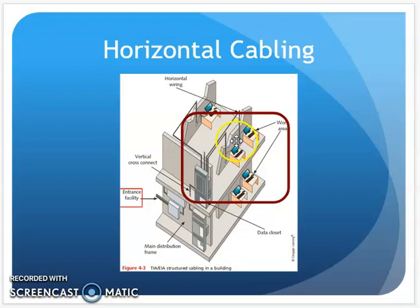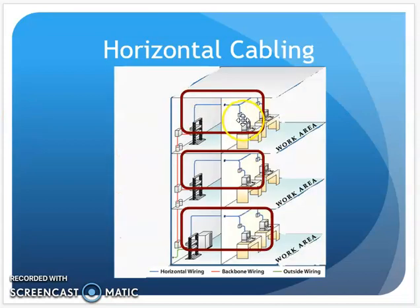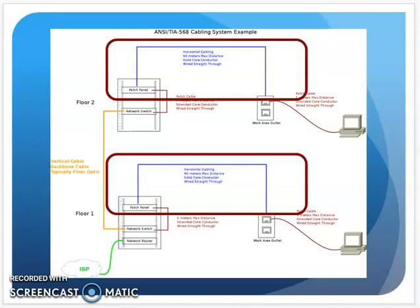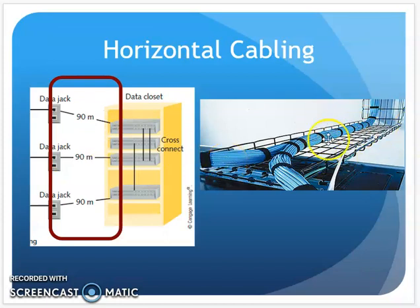In the diagrams, horizontal cabling goes from the outlet up through the wall, above the ceiling, down the hall, and into the data closet and patch panel. Above the ceiling, trays support the cabling. The cabling is bundled and organized in those trays so it won't be tampered with, messed with, or moved around. That's the 90 meters max for horizontal cabling.